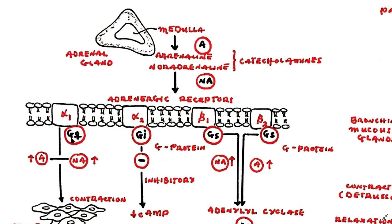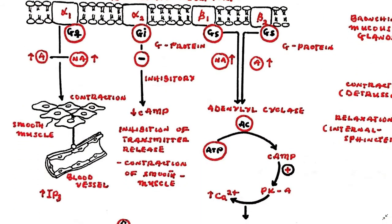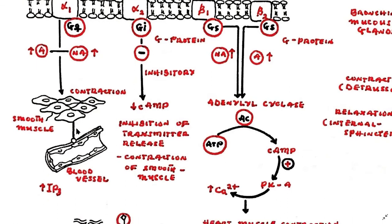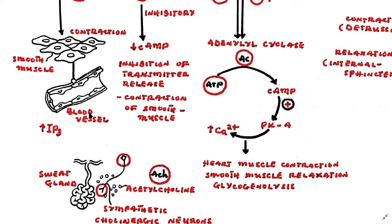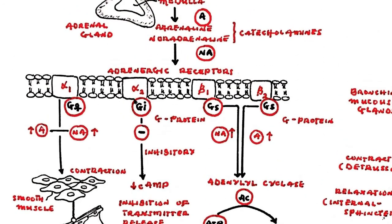Alpha-1 receptors are linked to Gq proteins and are commonly associated with smooth muscle contraction, for example in the smooth muscles of blood vessels. The alpha-2 receptors are Gi protein linked and they cause inhibition of transmitter release as well as contraction of smooth muscle.